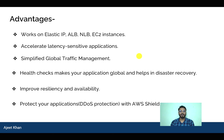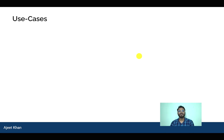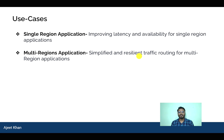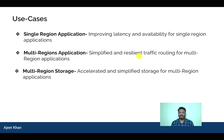Let us see the use cases — these are important for AWS exams, which are scenario-based. One scenario is a single-region application: Global Accelerator improves latency and availability for single-region applications. It also helps with multi-region applications by simplifying traffic routing across regions. When you have S3 multi-region access, Global Accelerator can direct traffic to the right location within AWS, routing through the AWS network and helping save costs as well.